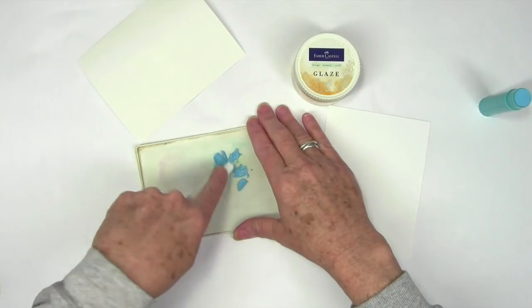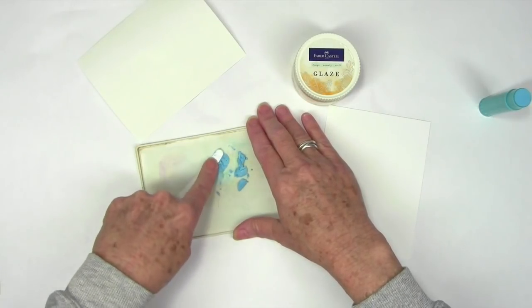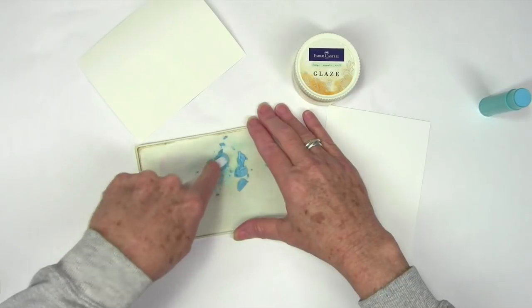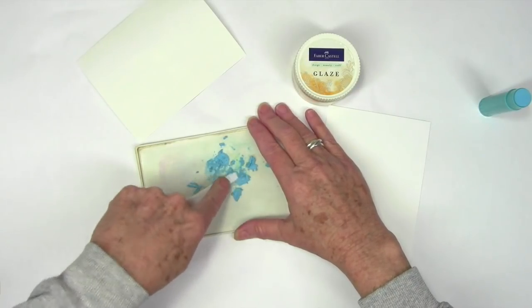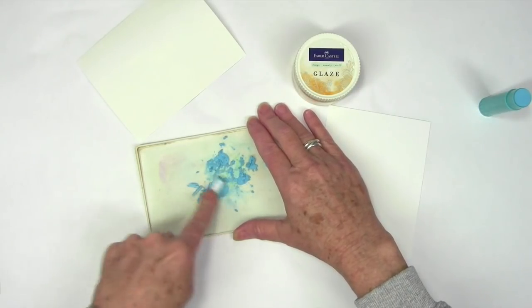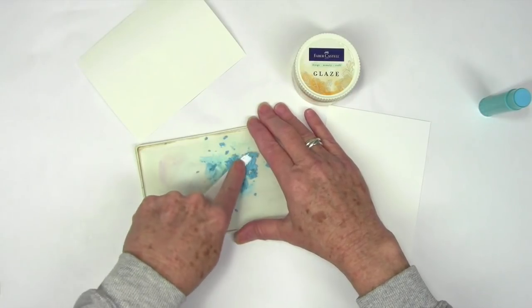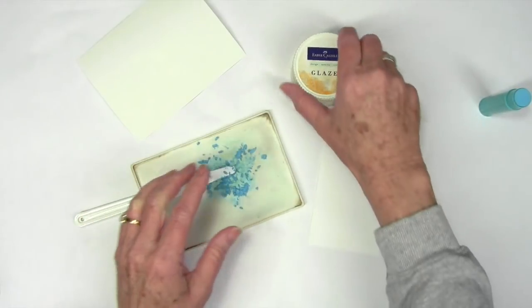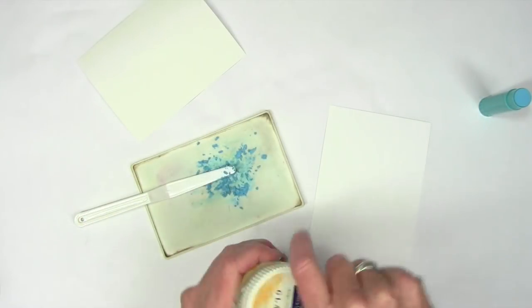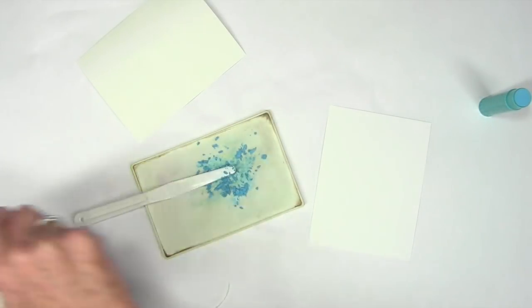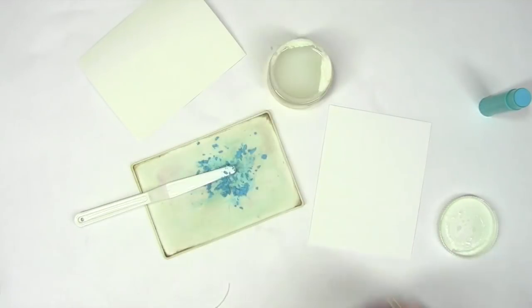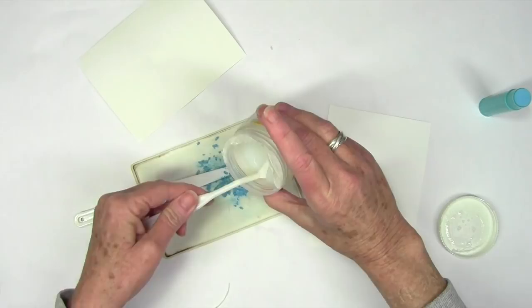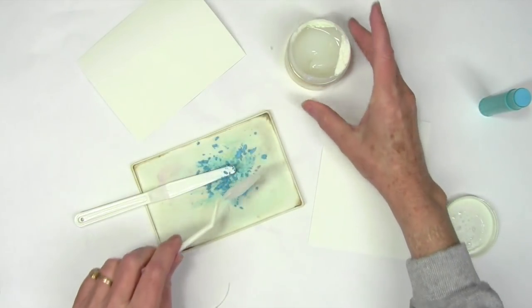I'm going to smash this down a little bit. It's really easy, like a heavy paste or a light crayon. It feels like wax but you can see it smashes down. I'm using the Faber Castell glaze and this is going to create a mixture for me and seal this color into my card.